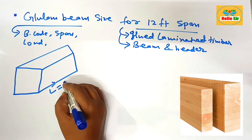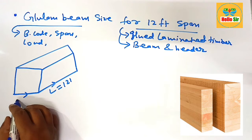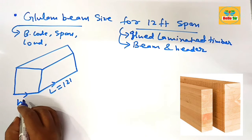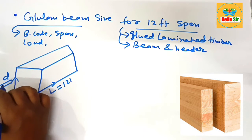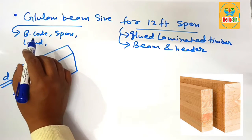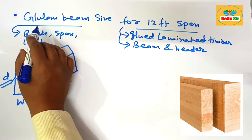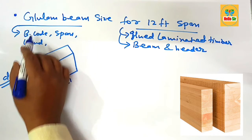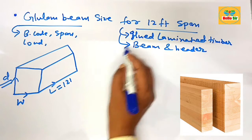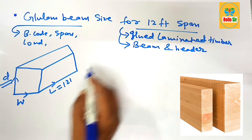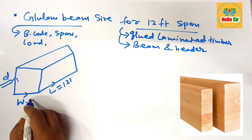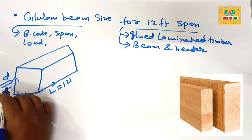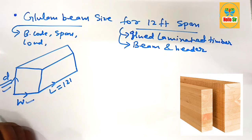The size of the glulam beam means you have to find the correct depth and width of the beam. In this rough diagram, the span length is given as 12 feet. The width and depth are the two dimensions you need to determine for the glulam beam spanning 12 feet.